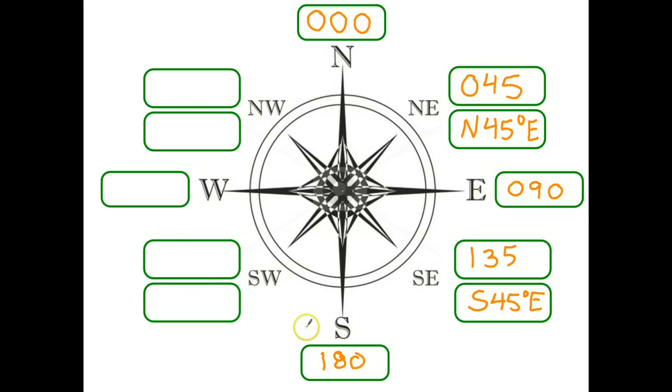Southwest, we're going to add 45 onto that, which gives us 2, 2, 5. And for the compass bearing, say that's south. The angle from the south is 45 degrees, and it's towards the west. West is the compass bearing, and it's 2, 7, 0 for the true bearing.